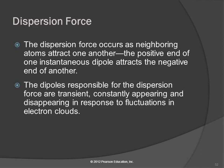Dispersion forces occur when an instantaneous dipole in one atom induces a dipole in a neighboring atom, and because of that they both have a little attraction. That's why the name 'induced dipole forces' is so descriptive. The dipoles responsible for these forces are transient — constantly appearing and disappearing because the electron clouds are fluctuating. Electrons are unpredictable; they're not in fixed orbits like planets but exist somewhere in that cloud.